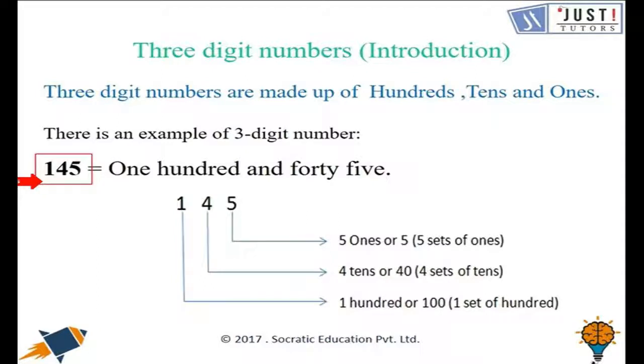Let's see how we can read and understand about it. So this has 5 ones, 4 tens, and 1 hundred. That means we can say it as 100, 40, and 5. And altogether we will say 145.